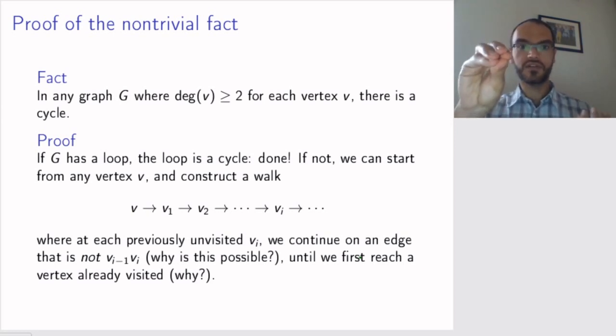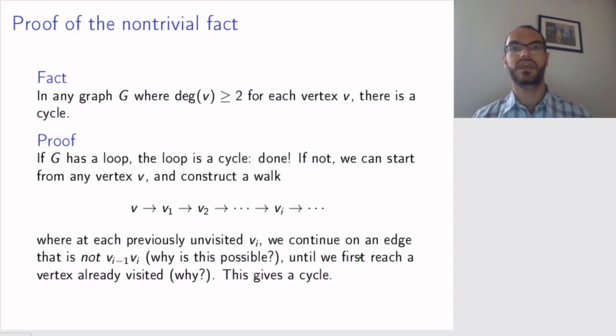Well then, the part of my walk from last time I visited this vertex, till I came back to it, is a cycle. And we're done. So, we have a cycle. So, this missing piece is also true, and this completes the proof of Euler's theorem.